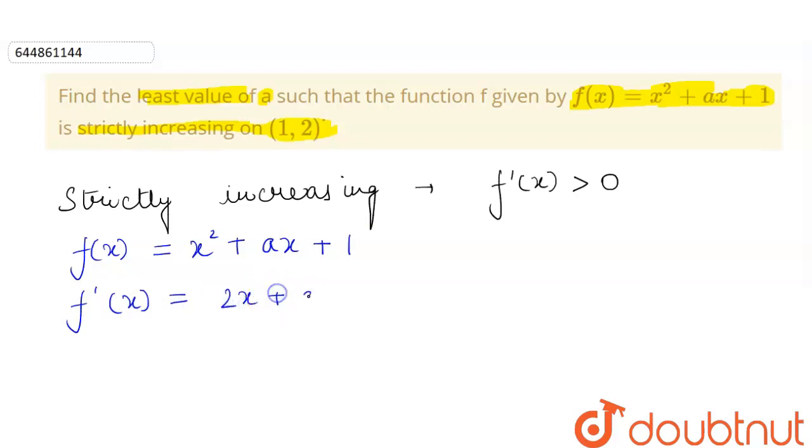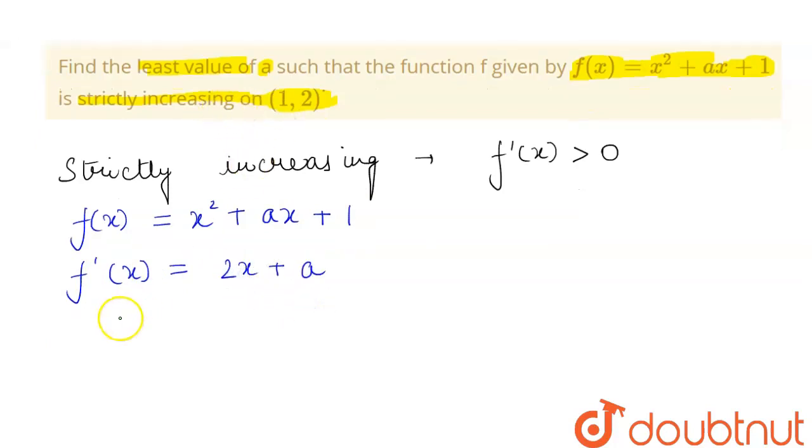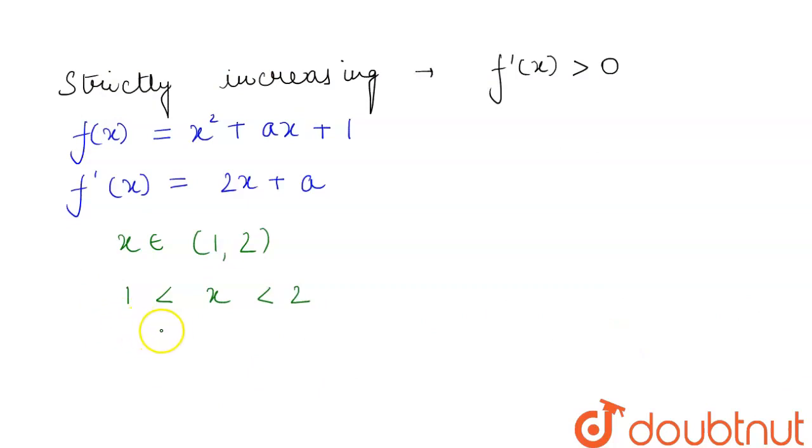Now we see that x lies in the range (1, 2), therefore 1 < x < 2. Let us try to make this in f'(x) form. If we multiply both sides by 2, this will become 2 < 2x < 4.